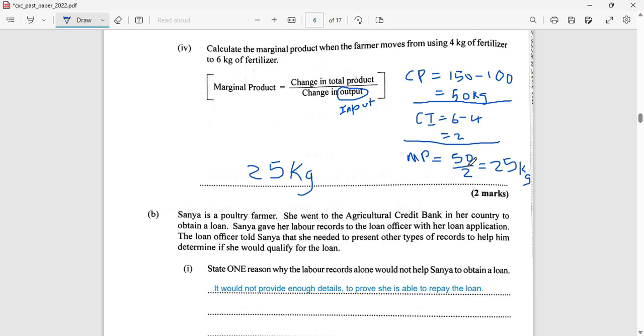Let's move to the other question. Sanya is a poultry farmer. She went to the agricultural credit bank in her country to obtain a loan. Sanya gave her labor records to the loan officer with her loan application. The loan officer told Sanya that she needed to present other types of records to help him determine if she would qualify for the loan. State one reason why the labor records alone would not help Sanya to obtain a loan.